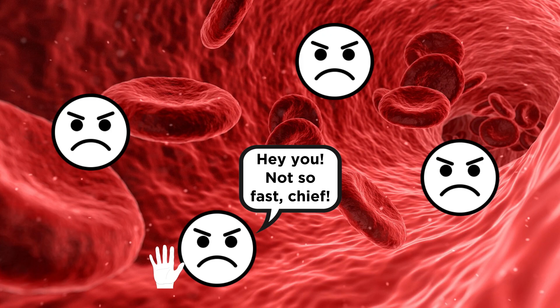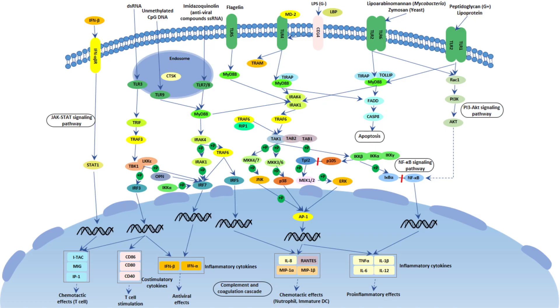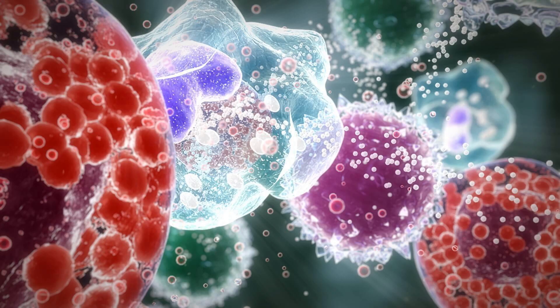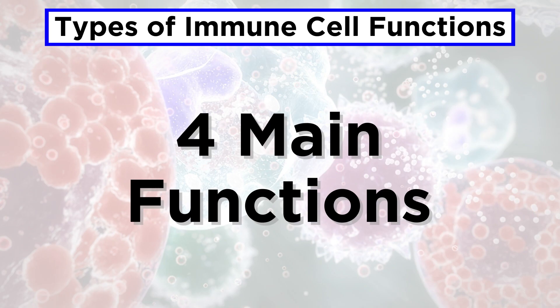As much as we may be tempted to bestow these cells with sentience, as though they are literal bodyguards, in actuality they are simply responding to specific chemical stimuli. But we are talking about a dynamic, complex system involving billions of different cells, constantly moving and interacting with one another. So let's first boil down the roles of immune cells to four main functions.